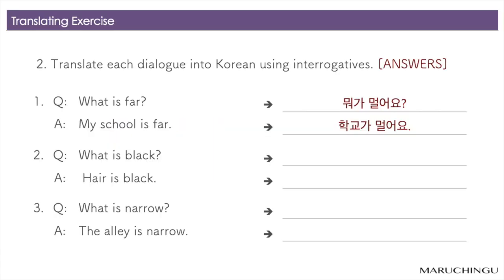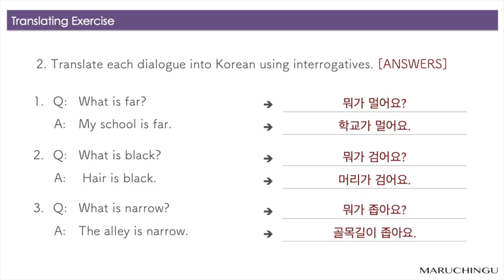1번. 뭐가 멀어요? 학교가 멀어요. 2번. 뭐가 검어요? 머리가 검어요. 3번. 뭐가 좁아요? 골목길이 좁아요.